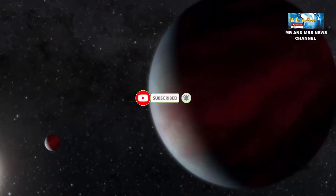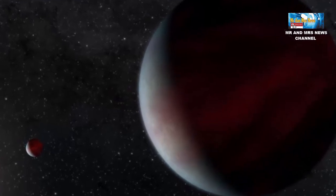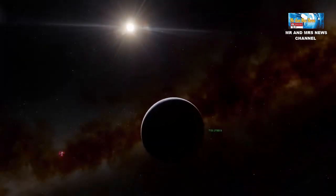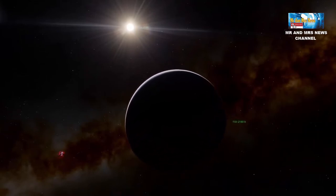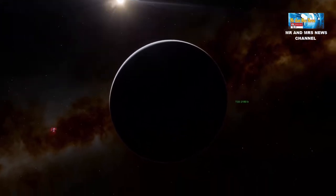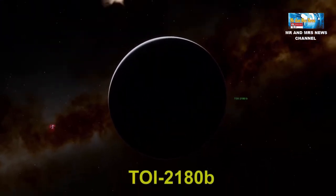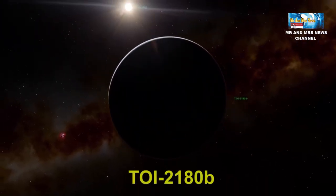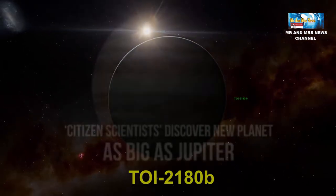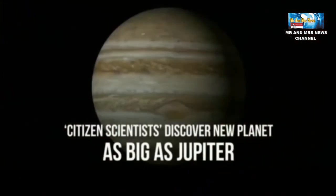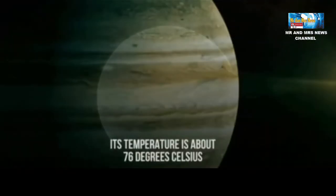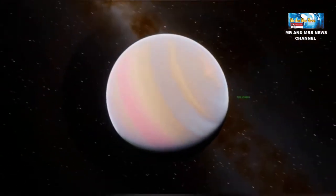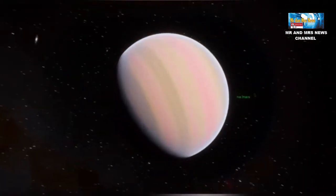Tim ilmuwan warga sipil ini menggunakan data dari Transiting Exoplanet Surface Satellite atau TESS untuk mengidentifikasi planet TOI 2180B. Planet ini mengorbit pada bintang dengan masa yang mirip matahari di tata surya manusia dengan masa orbit 261 hari. Planet ini mirip dengan Jupiter sebagai salah satu planet gas raksasa yang ditemukan di luar tata surya.